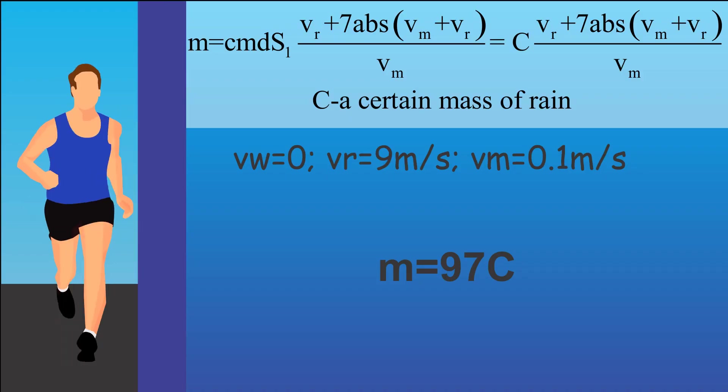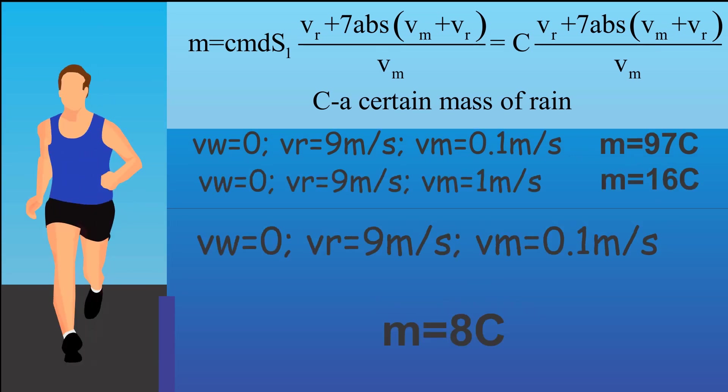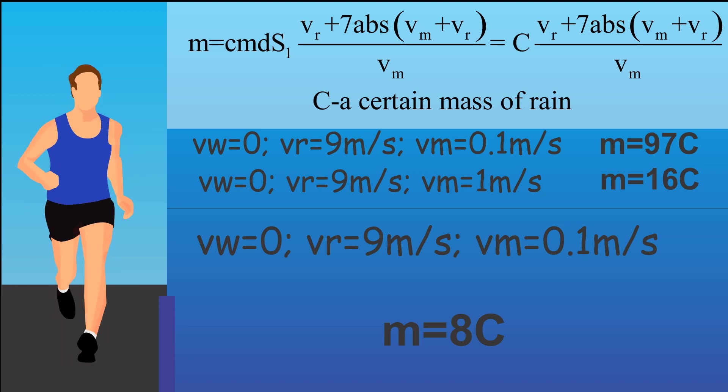Let's now analyze a few specific cases. Let the wind speed be 0 and the rain speed 9 meters per second. If the moving speed is 0.1 meters per second, you take 97 mass units of rain. If the speed is 1 meter per second, you take only 60 mass units. If you are pretty fast, running with a speed of 9 meters per second, you get half as wet as previously and take just 8 mass units.